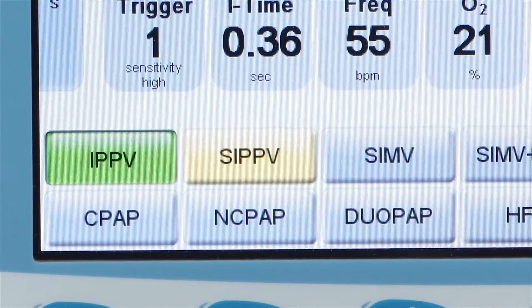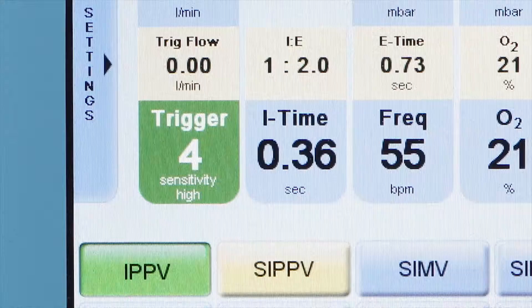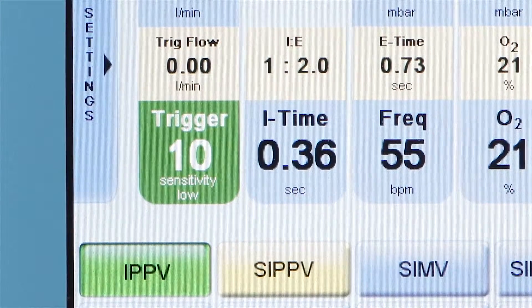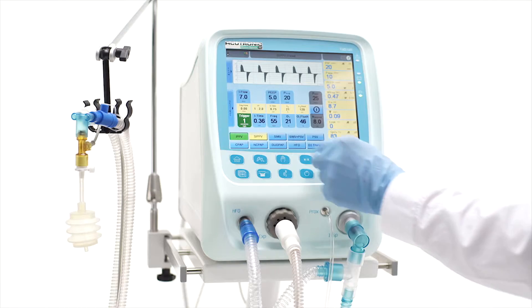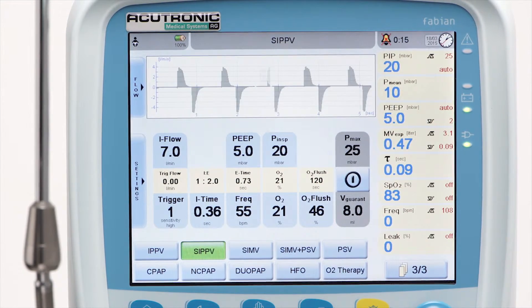SIPPV mode allows the patient to trigger a time-cycled, pressure-limited breath. Each inspiratory effort of the patient reaching the preset trigger threshold level will initiate a breath. The number of breaths per minute is determined by the patient.